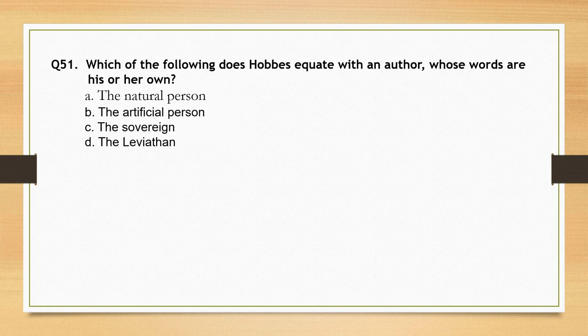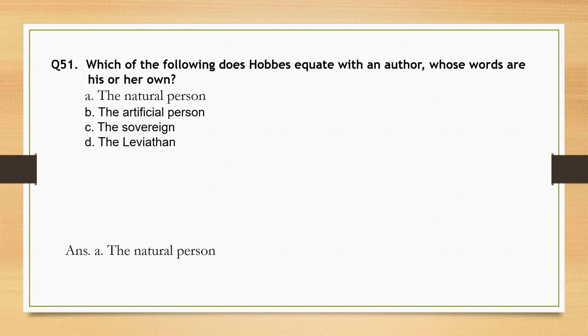Which of the following does Hobbes equate with an author whose words are his or her own? The natural person.